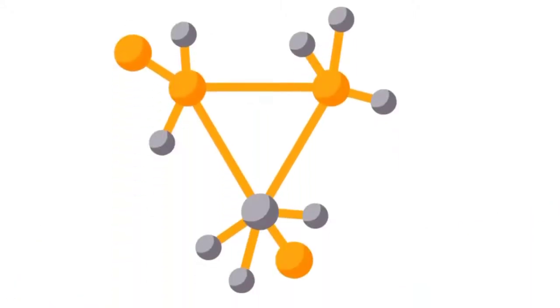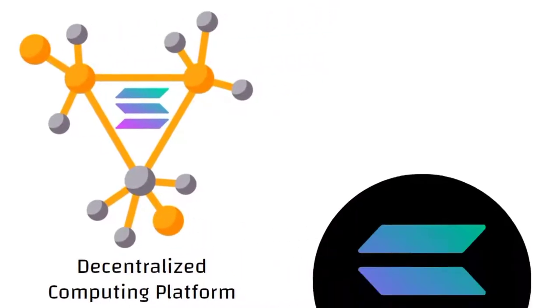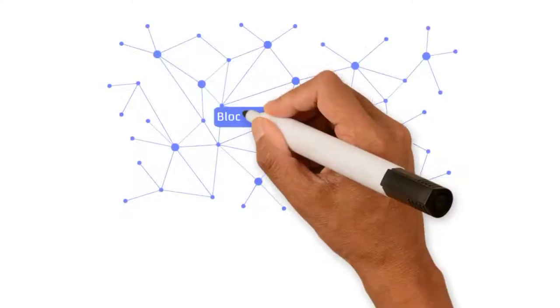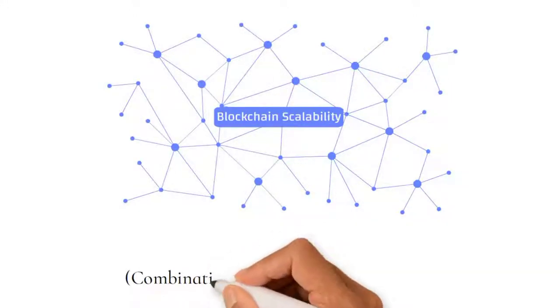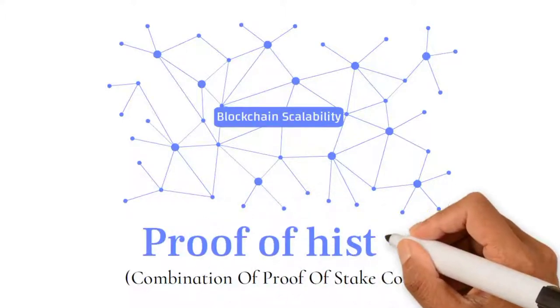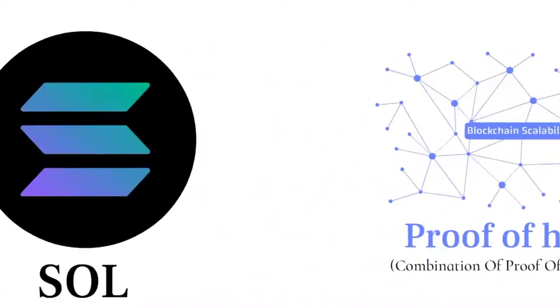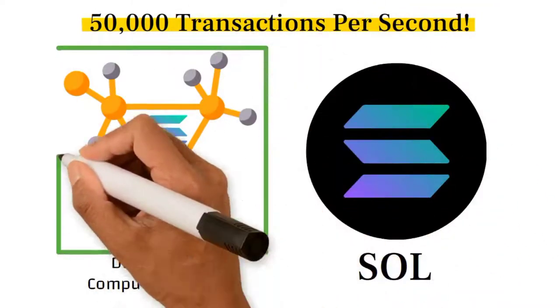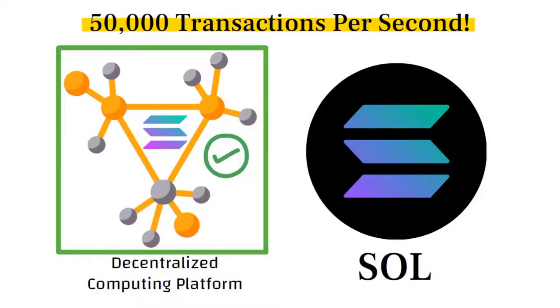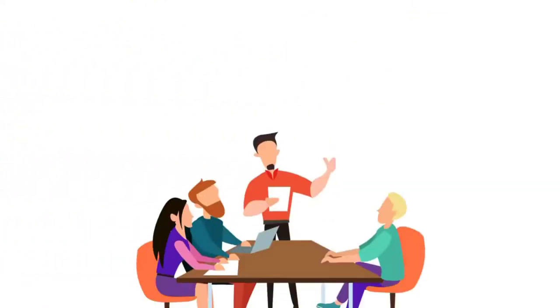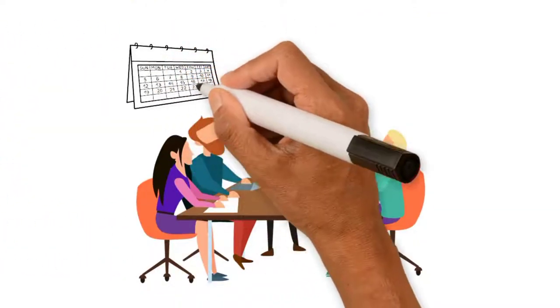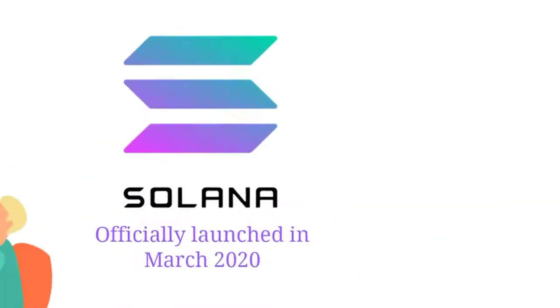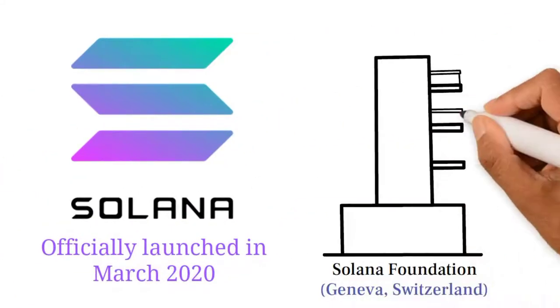Solana is a decentralized computing platform that uses Sol as its cryptocurrency. Solana aims to improve blockchain scalability by using a combination of proof-of-stake consensus and so-called proof of history. Solana claims to be able to support 50,000 transactions per second without sacrificing decentralization. Though the idea and initial work on this project began in 2017, Solana was officially launched in March 2020 by the Solana Foundation with headquarters in Geneva, Switzerland.